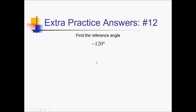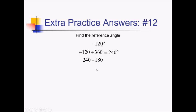To get the reference angle for this one, I'm going to first add 360 to get a positive angle. That will give me the positive angle 240. Now I just have to figure out how far this is from the closest x-axis angle, which would be 180. So 240 minus 180 is going to give me my reference angle of 60 degrees.